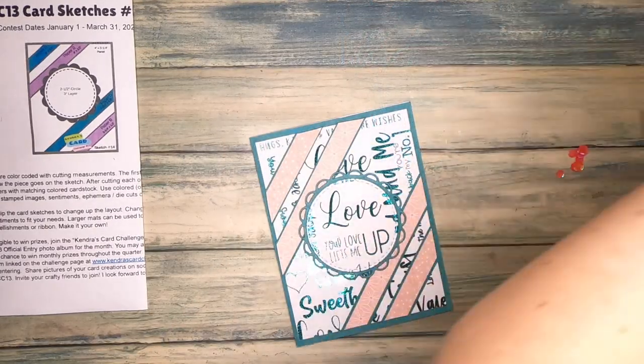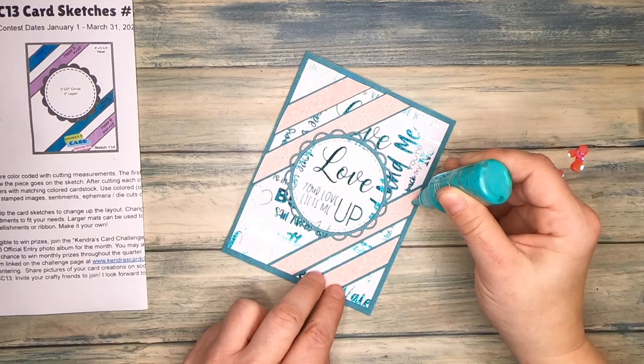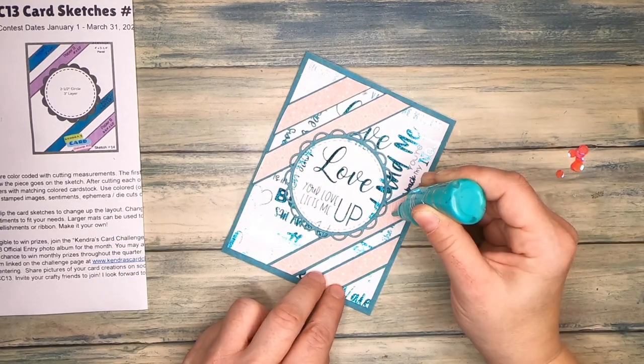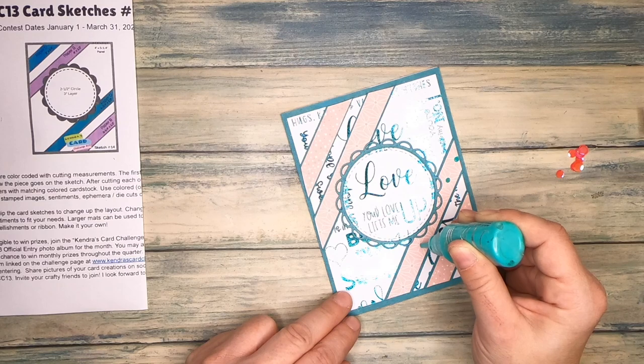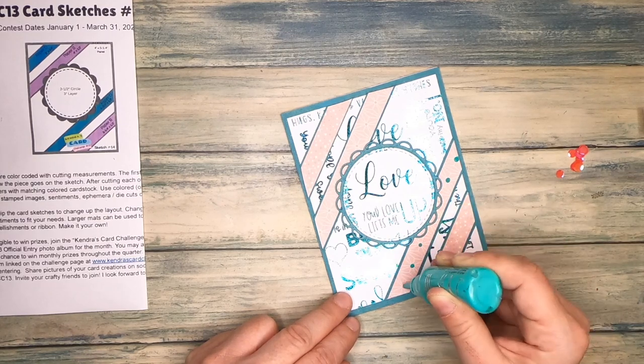As embellishment for the card, I used some turquoise drops. I used them to make dots on the strips, which fit perfectly to the pattern. Unfortunately, you can't see that very well in the video.